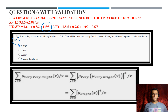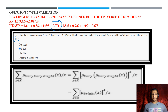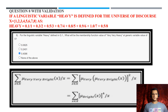Question 6: 'very very heavy' at generic variable 3. Element 3 has membership value 0.5; multiplying 0.5 four times gives 0.0625, so option A is correct. Question 7: generic variable 4. Element 4 has membership value 0.7; multiplying 0.7 four times (0.7 × 0.7 × 0.7 × 0.7) gives 0.2401, so option B is the correct answer.